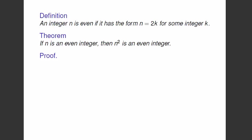So let's verify it with a couple of examples. So how do we know that the integer 6 is even? We know it's even because it has the form 6 equals 2 times 3, where 3 is an integer. We know that the number 10 is even because it has the form 10 equals 2 times 5, where 5 is an integer.